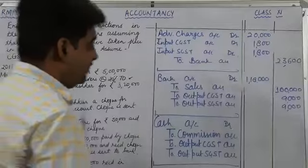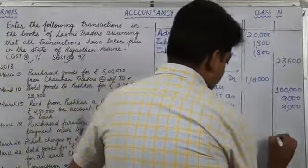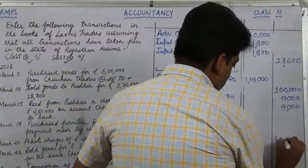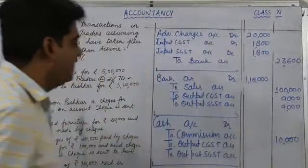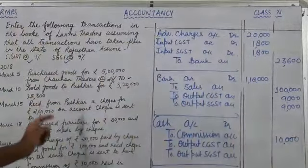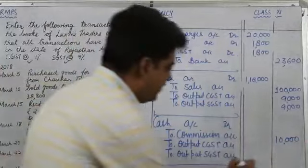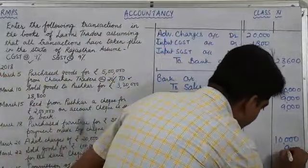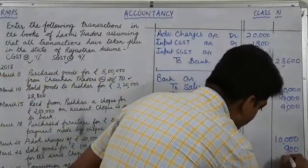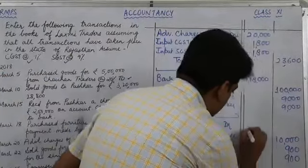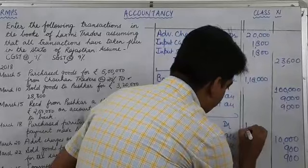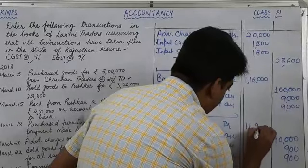How much commission have we received? 10,000. On 10,000 rupees, 9% taxes, that will be 900 each. So total it will be 11,800.